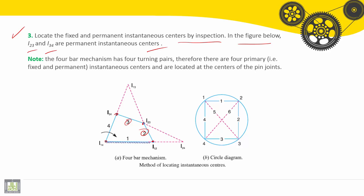How to find i(1,3), i(2,3), and i(2,4)? The four-bar mechanism has four turning pairs. Therefore, there are four primary instantaneous centers of rotation — fixed and permanent — and they are located at the centers of the pin joints.